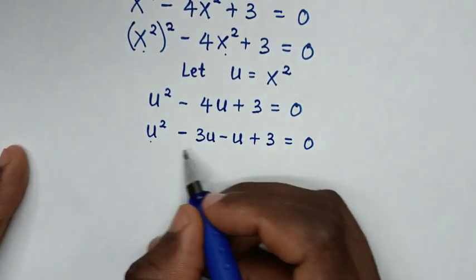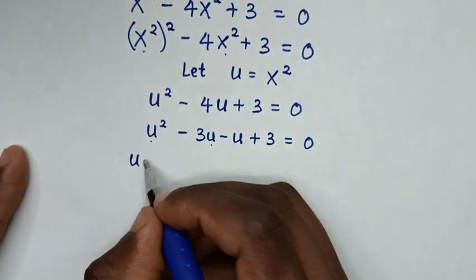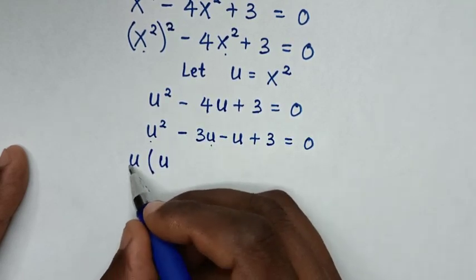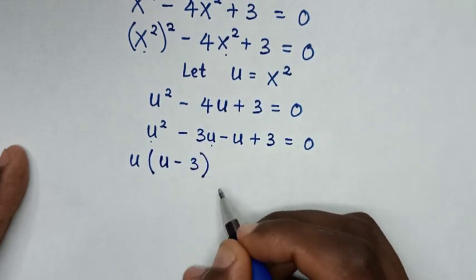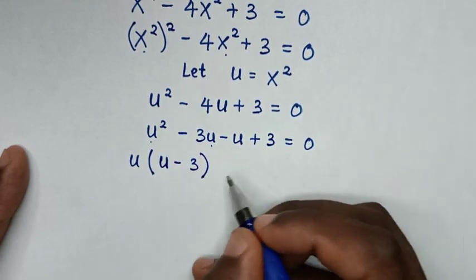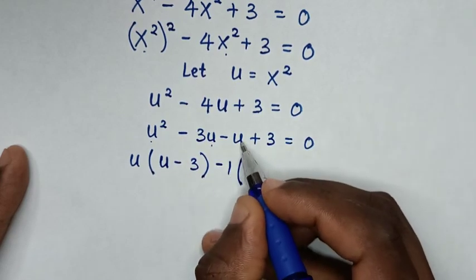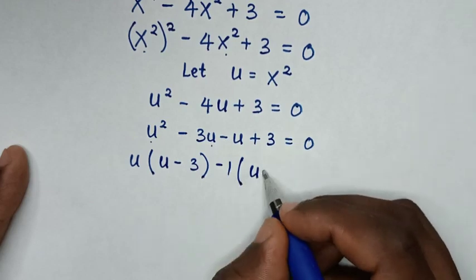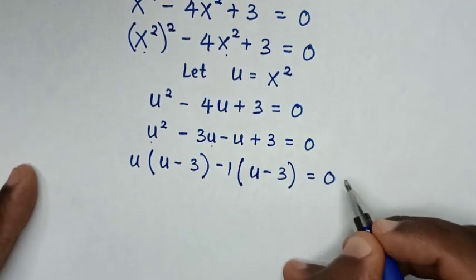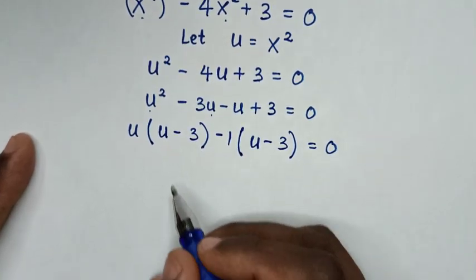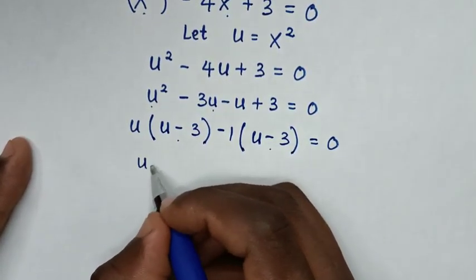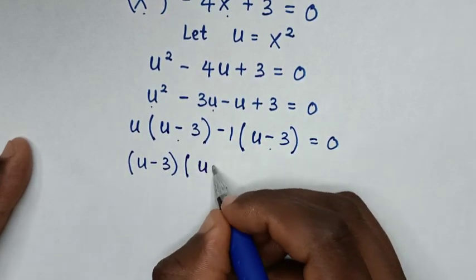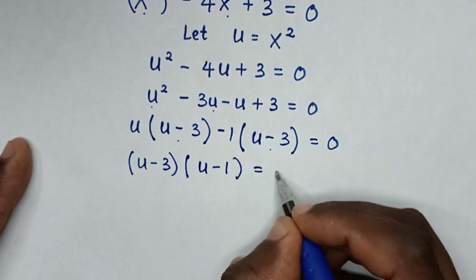Factoring: u is common from the first two terms giving u(u - 3), and then (u - 3) is common overall, so we get (u - 3)(u - 1) = 0.